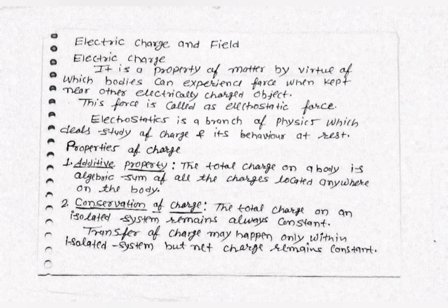The first property is the additive property. The total charge on a body is the algebraic sum of all the charges located anywhere on the body. The second property is conservation of charge: the total charge on an isolated system remains constant.